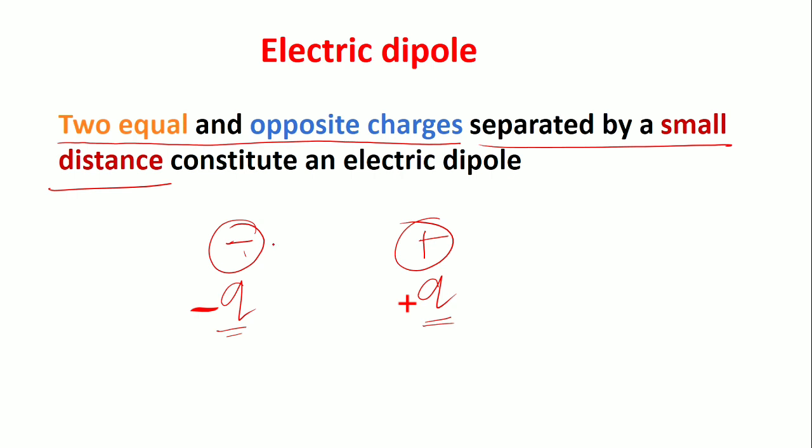Separated by a small distance, the distance between them at equal distances. This is what electric dipole is: equal and opposite charges separated by a small distance. That's it.